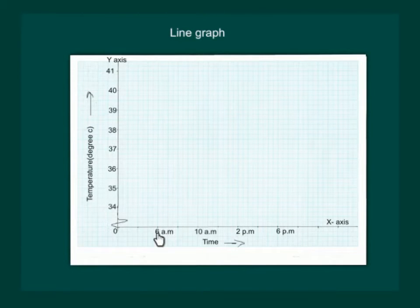At 6 am, the temperature was 37 degrees Celsius. So we will have a point here. Let us mark it as A. Similarly, at 10 am, temperature was 40 degrees Celsius. So we will have to mark a point B here. Now similarly, let us mark for 2 pm and 6 pm also. And we get points C and D on the graph.